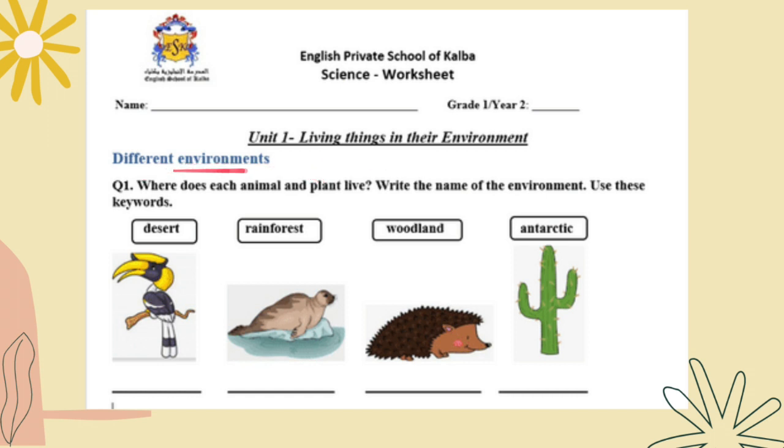We all know that animals and plants are living things. They live in different places in the world. The environment is everywhere where animals and plants prefer to grow and make new plants and animals. Let's answer question number one. Where does each animal and plant live? Write the name of the environment in this line. Use these keywords: desert, rainforest, woodland, antarctic.